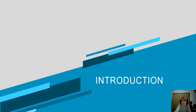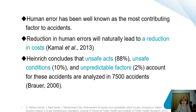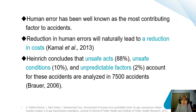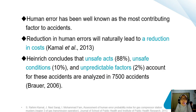I would like to talk about the introduction. Human error has been well known as the most contributing factor to accidents, and previous studies illustrate that a reduction in human error naturally leads to a reduction in cost. Hendricks also concludes that unsafe actions contributed 88%, unsafe conditions 10%, and unpredictable factors 2%, based on an analysis of 7,500 accidents.